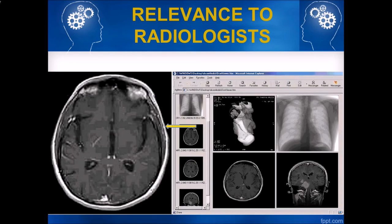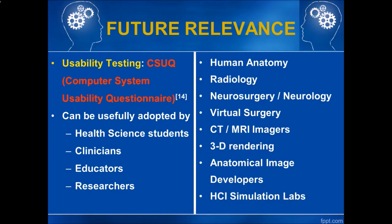This is another view of how it is relevant to radiologists, because nowadays all radiological images are DICOM images — digital imaging and communication in medicine. This is a screenshot of a DICOM image showing an axial view, and this is a coronal view of the brain. So this is how it is relevant not only to students learning medical tools but also to radiology residents and clinicians. The future relevance of this work is that this testing system needs to be tested rigorously by means of a computer system usability questionnaire, and it can be adopted by health science students, clinician educators, researchers, and various other fields of expertise.